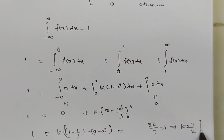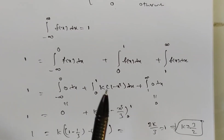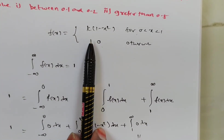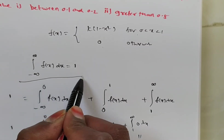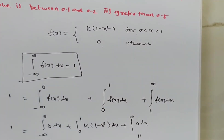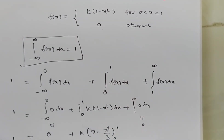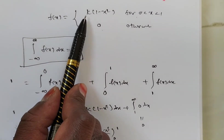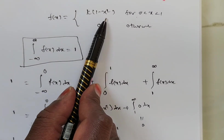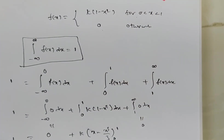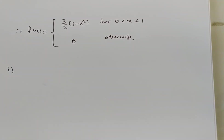So k equals 3/2. Remember, if the given function is a probability density function and you want to find k, use the condition that total probability equals 1. Now replacing k, f(x) becomes (3/2)(1 minus x squared) for 0 less than x less than 1, and 0 otherwise.